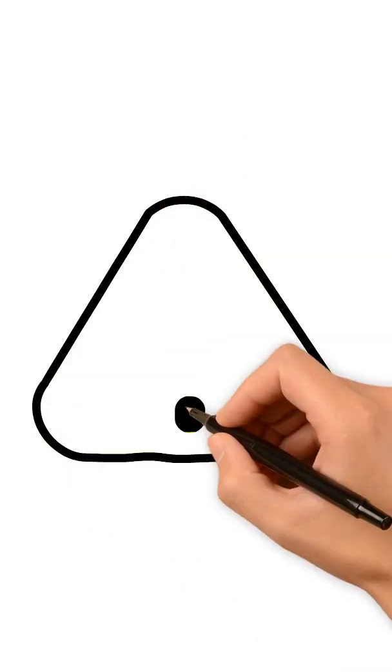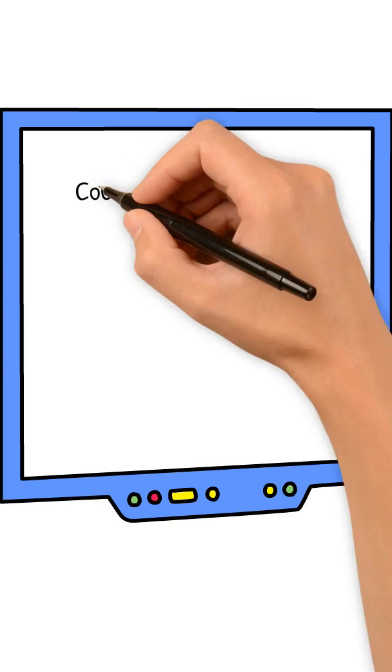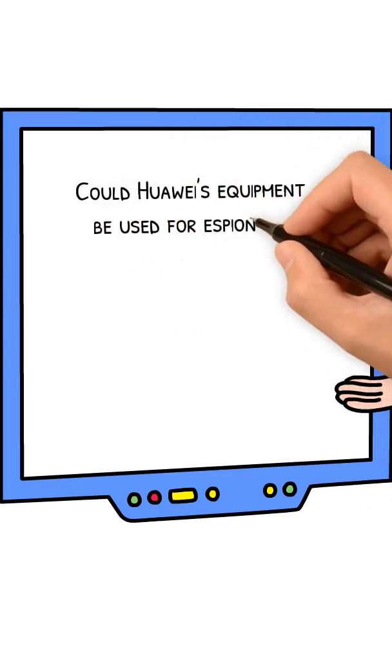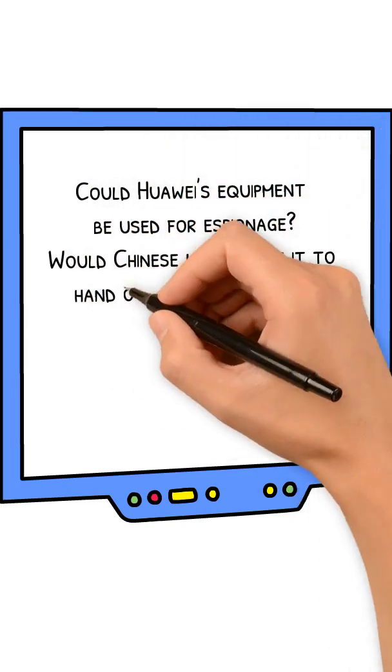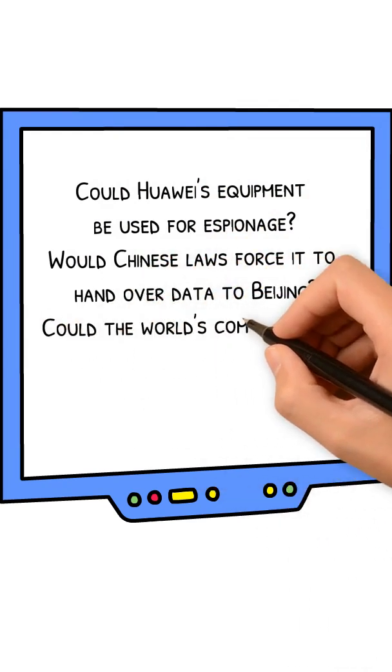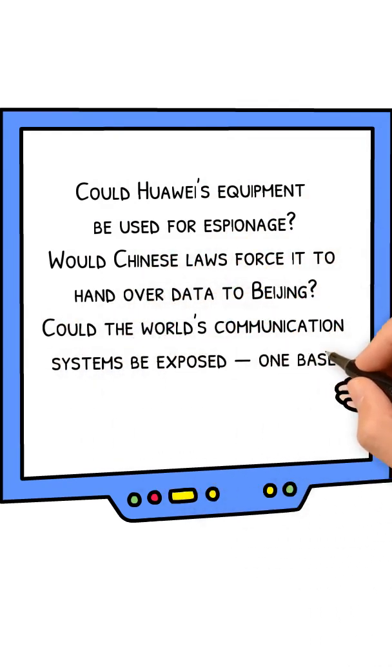But with speed came suspicion. The U.S. government raised alarms. Could Huawei's equipment be used for espionage? Would Chinese laws force it to hand over data to Beijing? Could the world's communication systems be exposed one base station at a time?